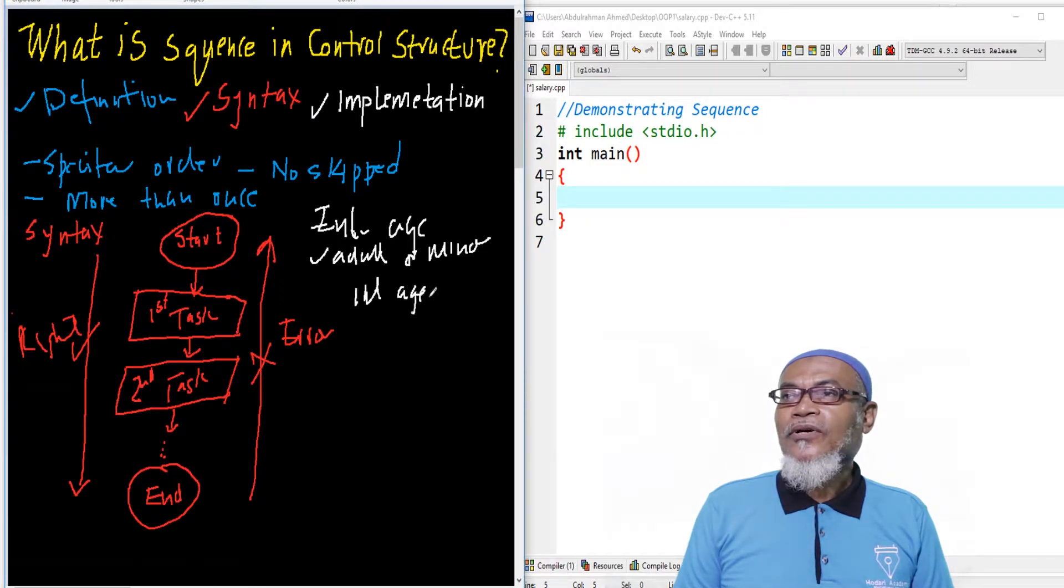We'll say, initialize age. So int age. And then we tell them to enter their age. And then using a scanf, we are going to capture the age.